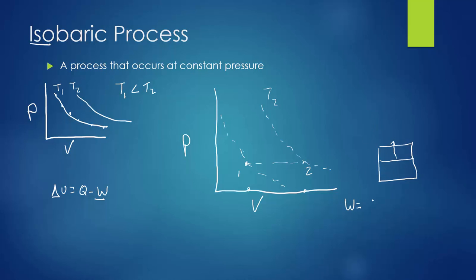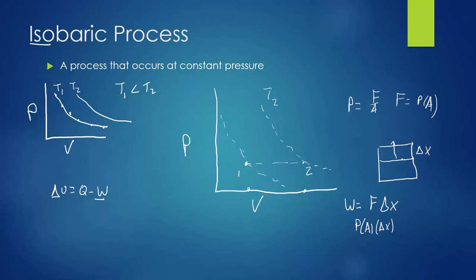Work equals force times displacement — from physics 1. If the piston moved from its original position to a new position, the force acted through distance delta x. Since pressure equals force over area, force equals pressure times area. Substituting: work equals pressure times area times delta x. The area of the piston multiplied by the height gives the new volume — so work equals pressure times the change in volume, W = P·ΔV.